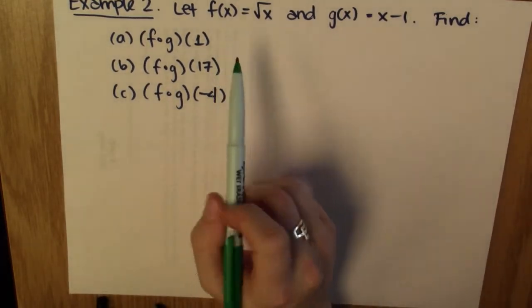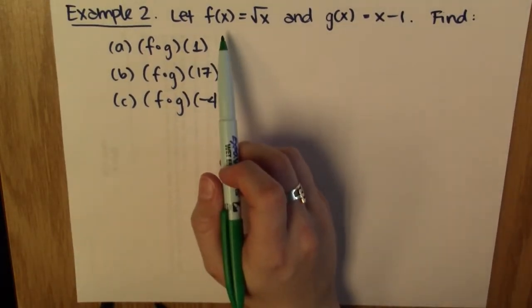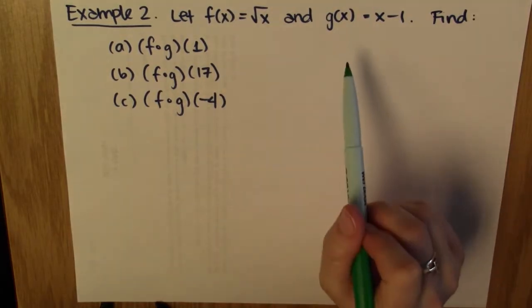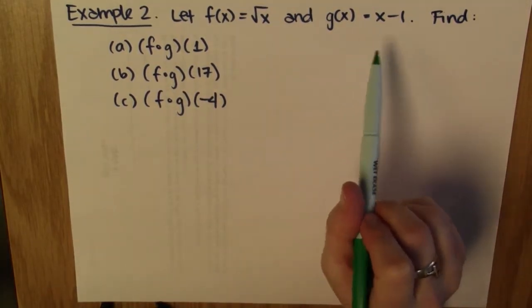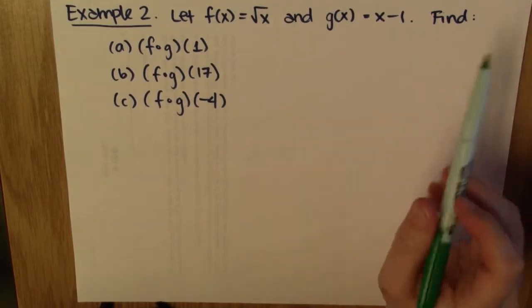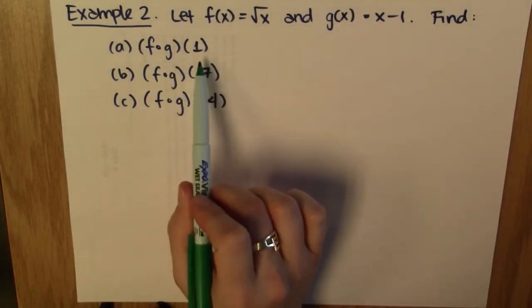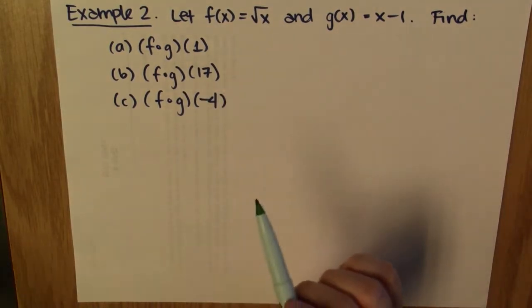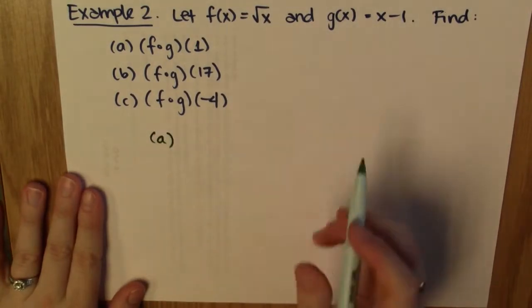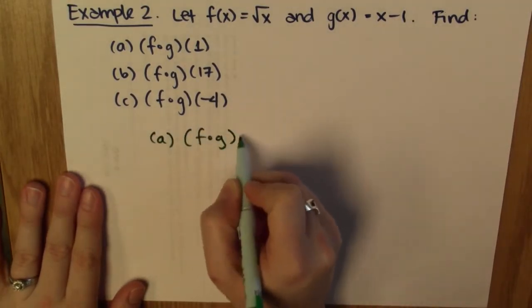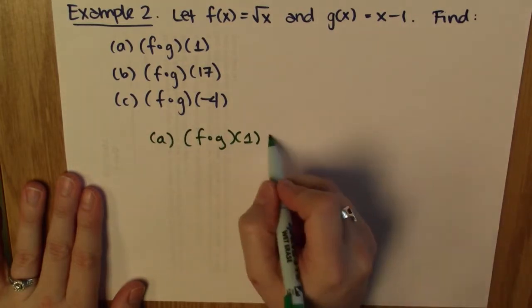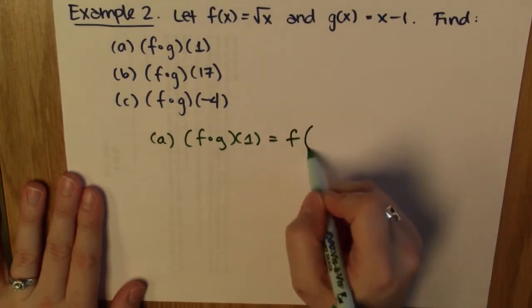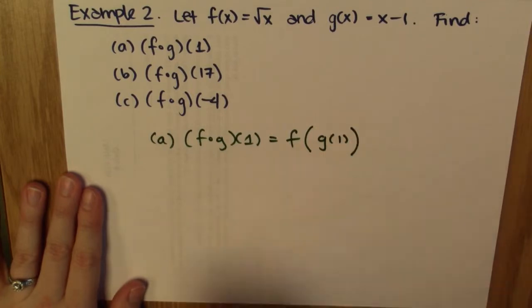Here's our second example. I'm given a different function f — this time f of x is equal to the square root of x. And g of x is equal to x minus 1. I want to figure out f composed with g evaluated at 1, at 17, and at negative 4. Let's work this out. For part a, f composed with g of 1 means f of g of 1.